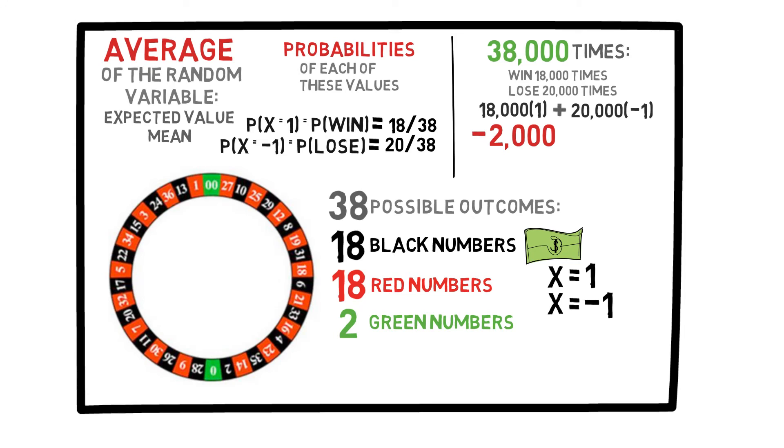In other words, at the end of the day, you would approximately lose $2,000. So, your average profit per game would be minus 2,000 divided by 38,000, which is negative 0.053.